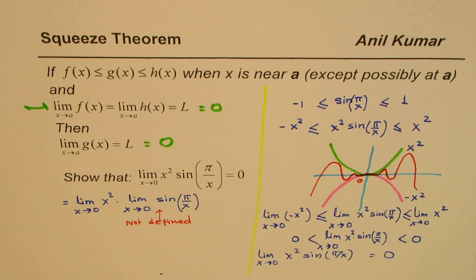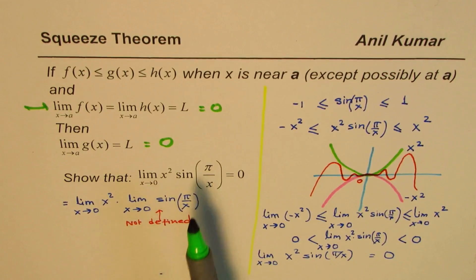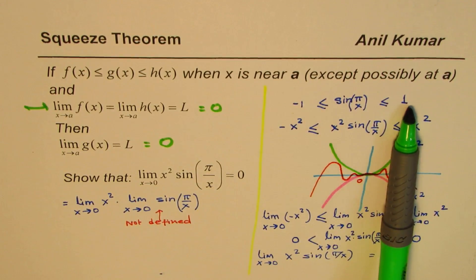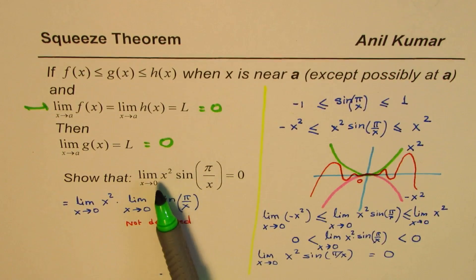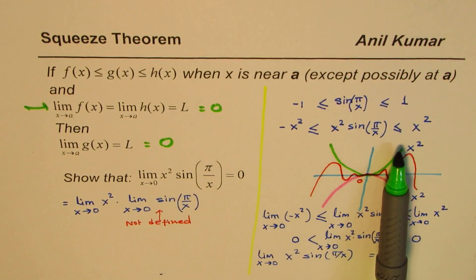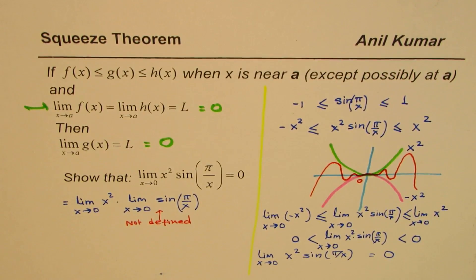So that is how we could actually prove that the limit of x² sin(π/x) is equal to 0. You'll find most of the trigonometric functions, like sine and cosine, their range is between -1 and +1. So if you have functions with those, many of them could be solved in this fashion using the squeeze theorem.